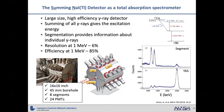The segmented gamma ray calorimeter we use is SUN, the Summing NaI(Tl) detector. It's a large, high-efficiency gamma ray detector composed of sodium iodide, segmented into eight segments. Looking at an individual segment gives information about individual gamma rays, while summing across the entire detector volume gives access to the total excitation energy. As an example, cobalt-60 beta decays emitting two characteristic gamma rays visible in one segment; summing gives the total level energy.